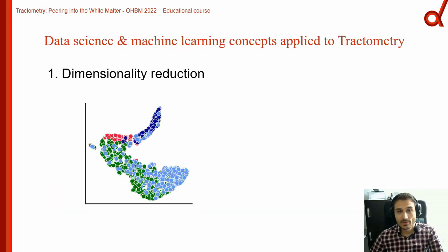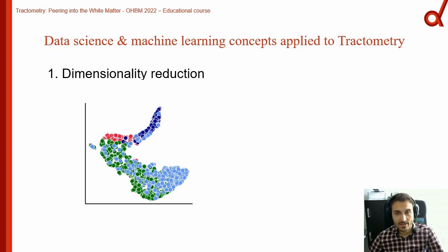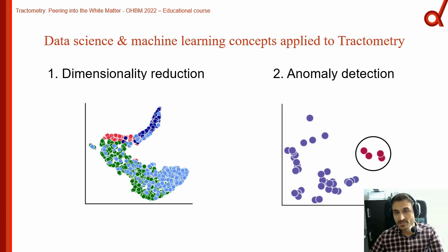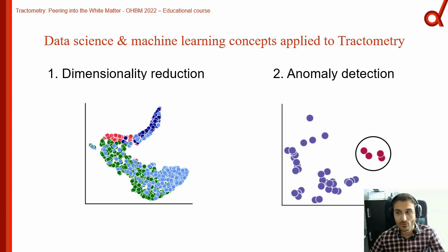In this talk, we will introduce two key concepts borrowed from data science but applied to tractometry. The first one is dimensionality reduction, where one typically projects high-dimensional data onto a low-dimensional space, which is more convenient for visualization and interpretation. The second one is anomaly detection, which is the identification of rare observations that deviate significantly from the rest of your data.